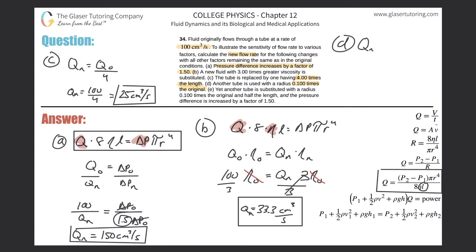The new Q value will equal the old Q value multiplied by the exact change: it's 0.1 of the old value raised to the fourth. So we have the old value of 100, and this will now be 10% of the original raised to the fourth power. So the new flow rate is 100 times 0.1 raised to the fourth power, giving a value of 0.0001 cubic centimeters per second.